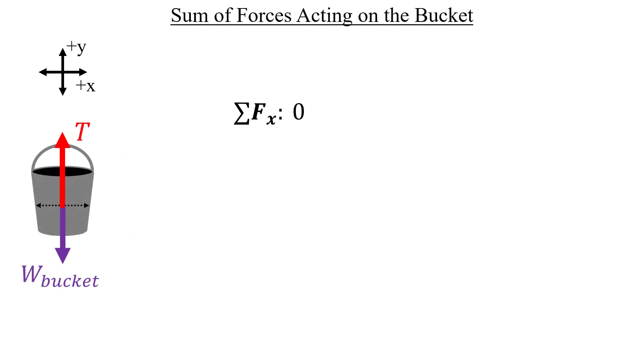The bucket only moves vertically, so nothing happens in the x direction. In the y direction, the tension and the weight will balance due to that lack of acceleration. Now we can solve the rest of Part A. If the tension is equal to the static friction on the box, and it's also equal to the weight of the bucket, then that means that the current static friction on the box is just equal to the weight of the bucket.